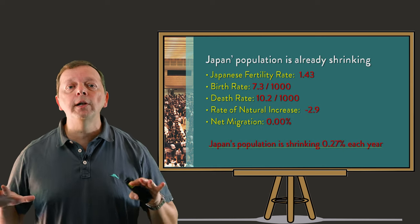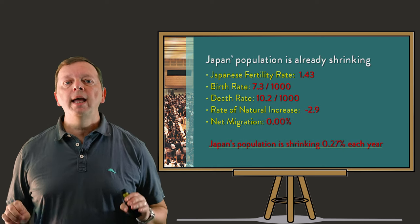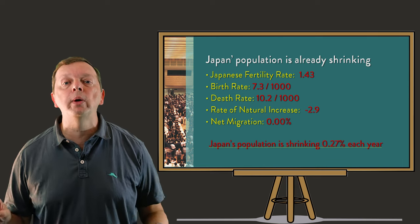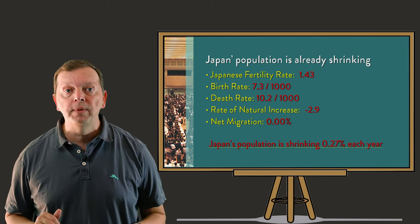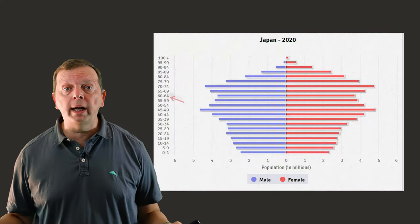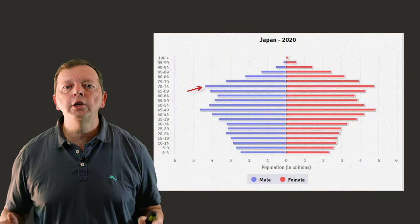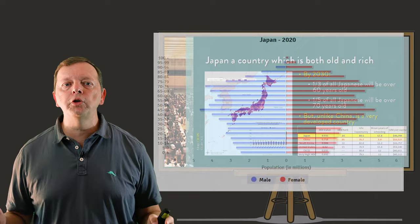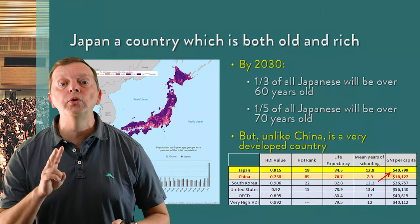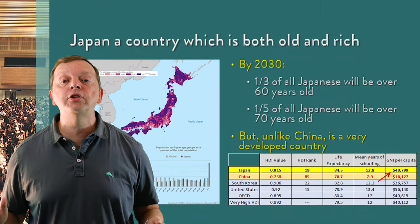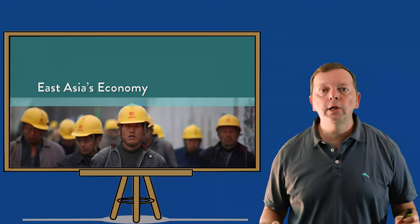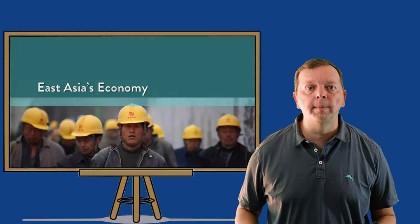Japan has a fertility rate even lower than China, and with no increase in migration, each year Japan's population is shrinking by more than a quarter percent. A sizable percentage of Japan's population is already over 60 years old. Yet unlike China, Japan is a fairly developed country — not only is Japan's GDP per capita more than two times that of China, but the HDI is also greatly higher. So what created Japan's economic success?